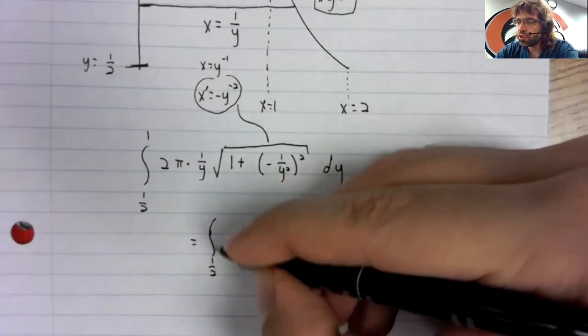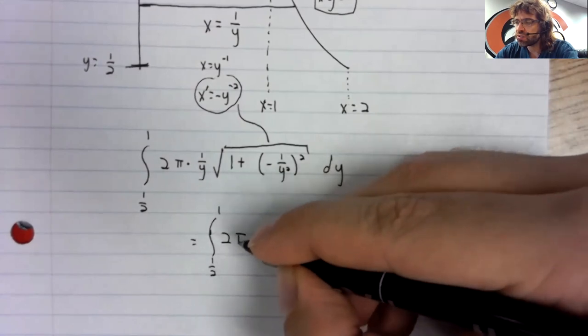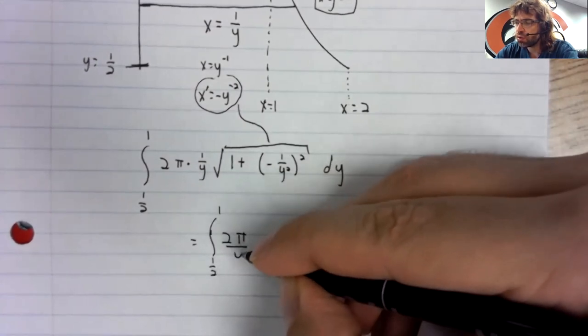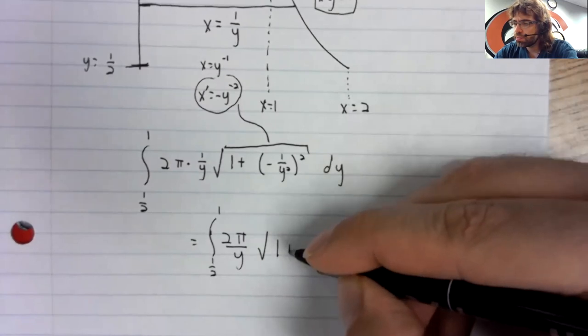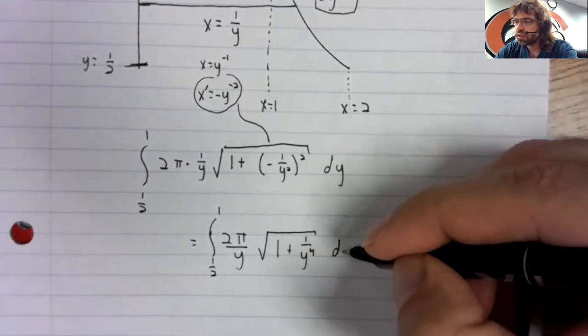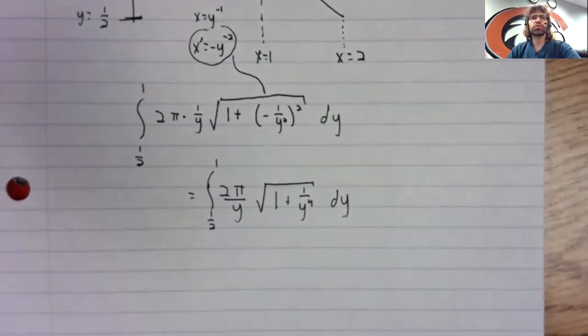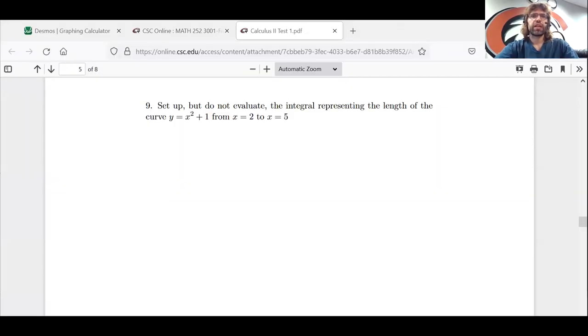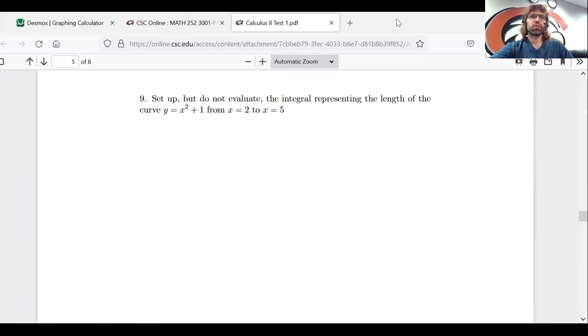And that derivative must itself be squared. And we could simplify this a little inside the square root. Now the arc length formula.